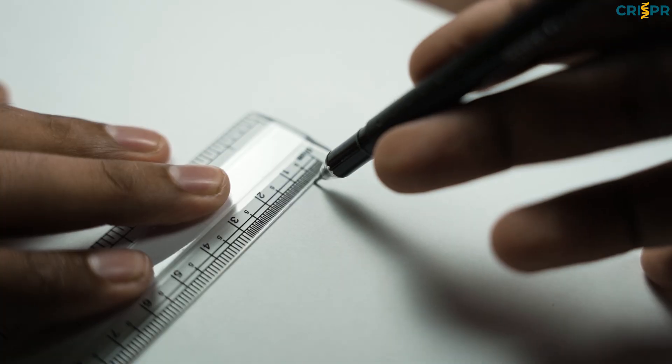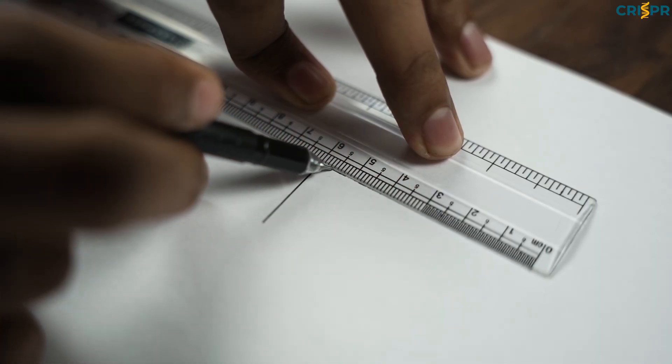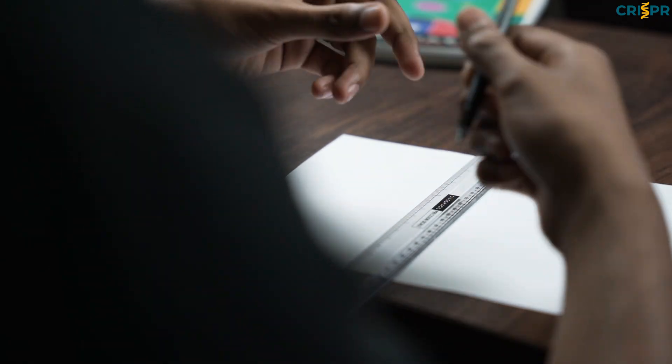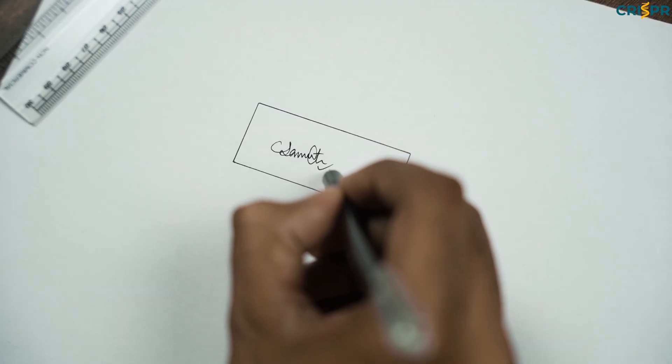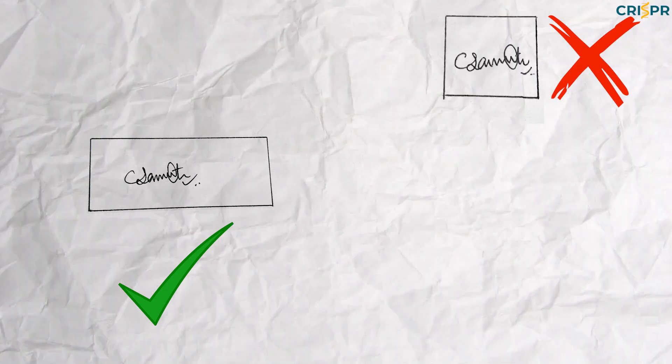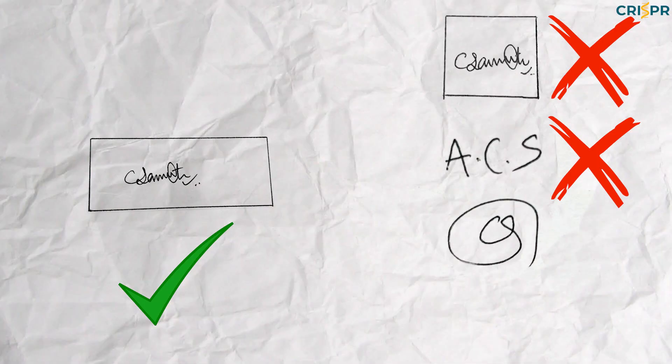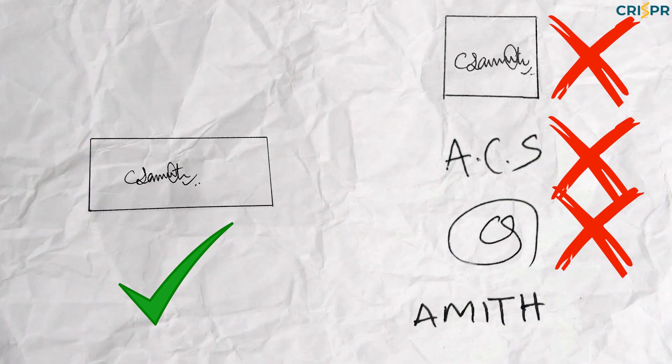For the signature, you need to sign on a white A4 sheet. Draw a box with a scale of 2.5cm height and 6cm width — a rectangle — and do your signature inside that box. Make sure the signature is only within the box; anything outside the box will be rejected.